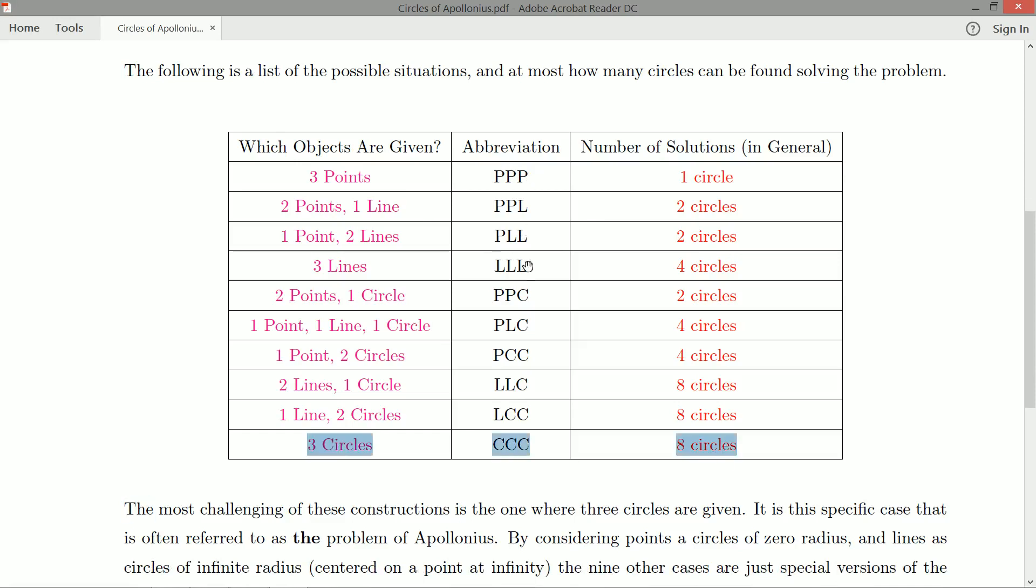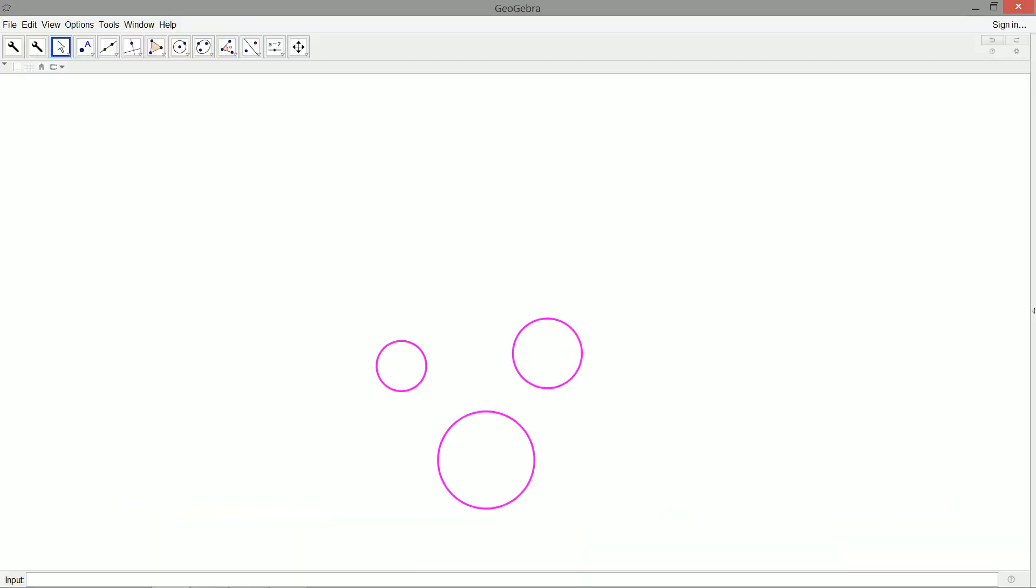And we're going to work our way down the list. And then we arrive at the very end. So we've talked about point, point, point. We talked about LLL. The other one that has all three objects the same are three circles, CCC. And when I say three objects the same, I don't mean that the circles are the same size, or that they're all related in some way, just that they're all circles. And CCC is sort of the most interesting of the cases. It is the most challenging one. It's got a large number of solutions, eight solutions in general.